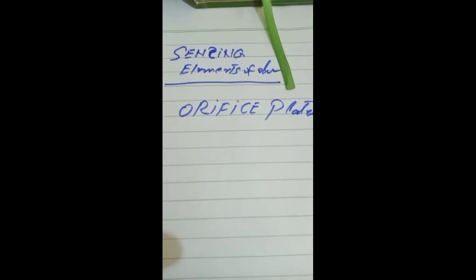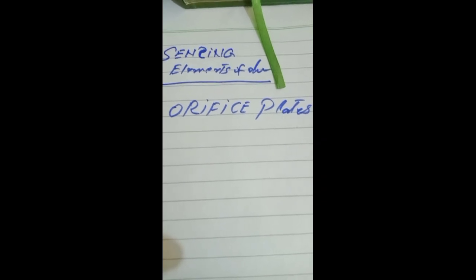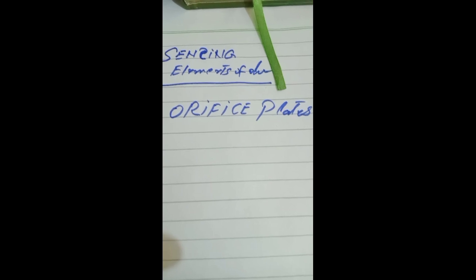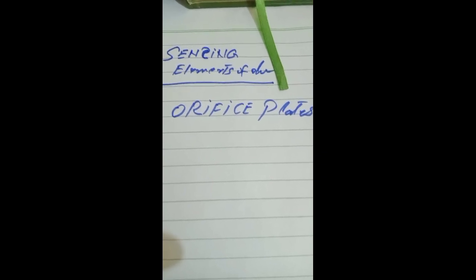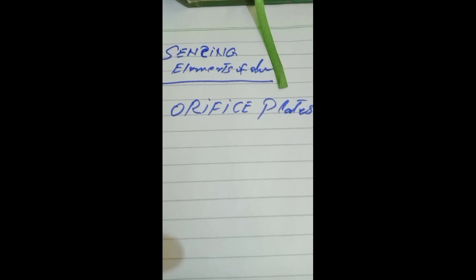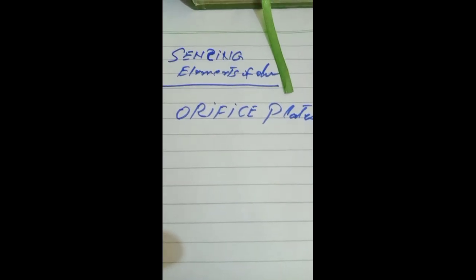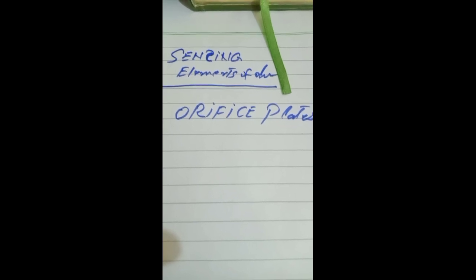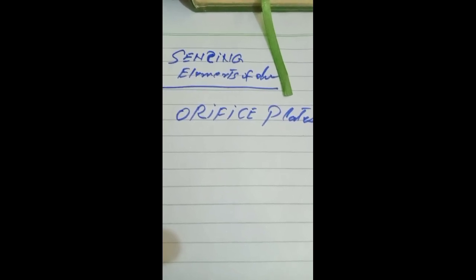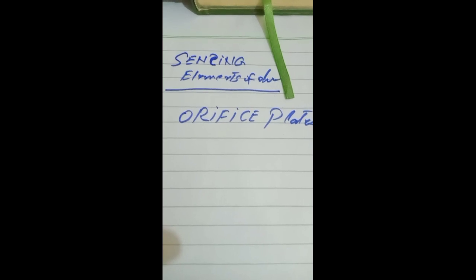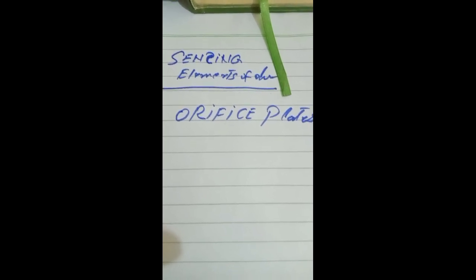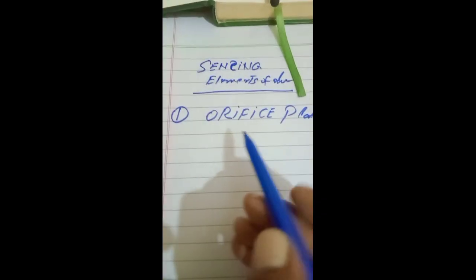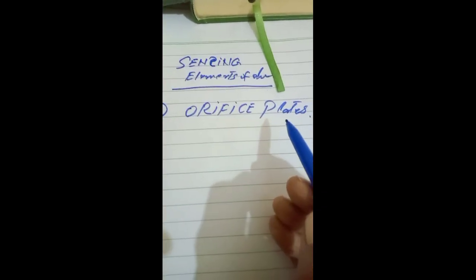There are three or four types of orifice plate, which we will cover in the next video regarding the sensing elements for the flow. To summarize: an orifice plate is a metal disc with a concentric hole in it, which is inserted into a pipe carrying the flowing fluid. This is the simple introduction of the orifice plate — our first flow sensing element.